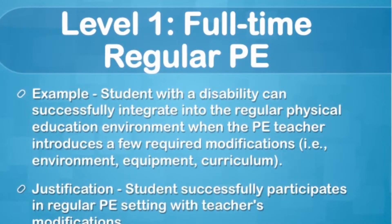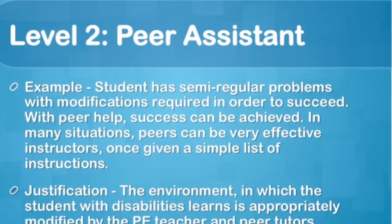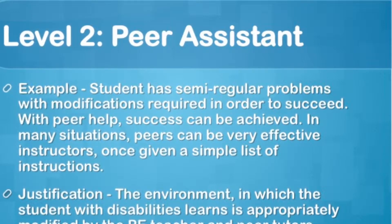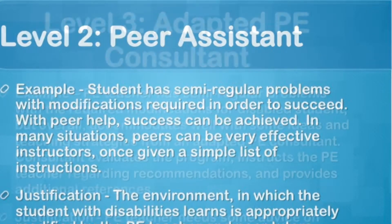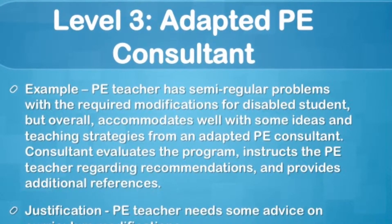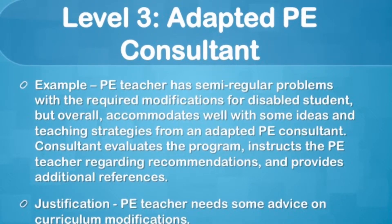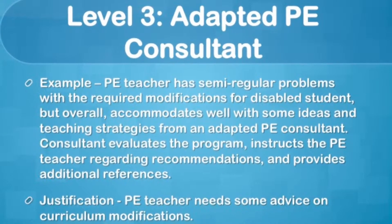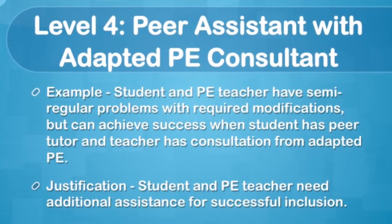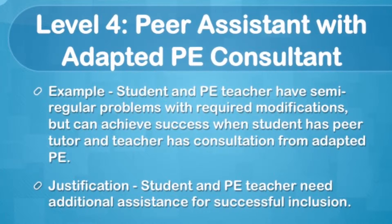Level two, we have a peer assistant — a student has a mentor or classmate that can help them out and give them a simple list of instructions. Level three, there's an adaptive PE consultant that helps appear in the classroom. Level four, there's a peer assistant with an adaptive PE consultant, so now they're working together to help the cause. Students and PE teachers have semi-regular problems with required modifications.